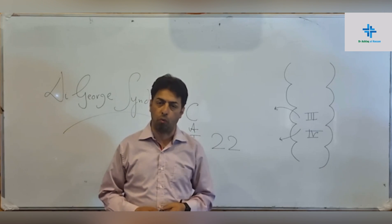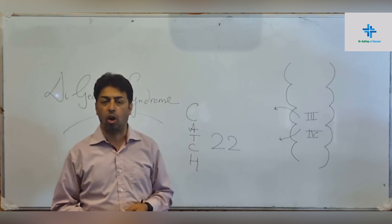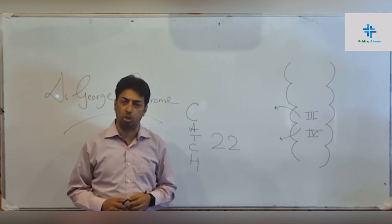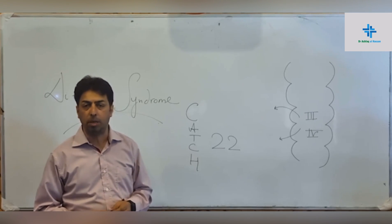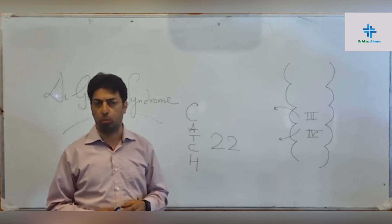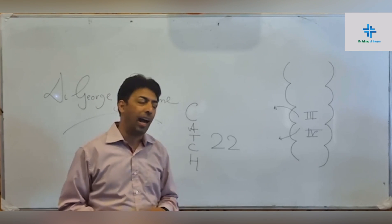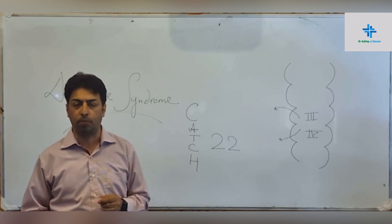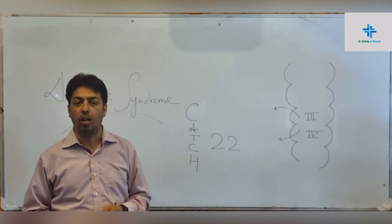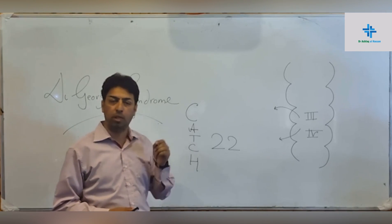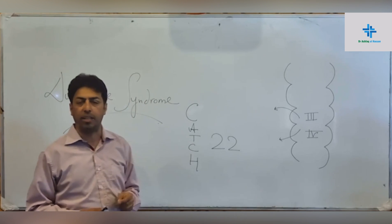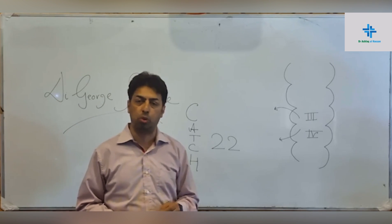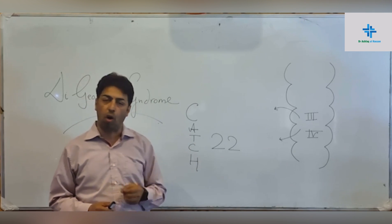Going to the specificities of DiGeorge syndrome, we'll deal with each aspect of these microdeletion syndromes. DiGeorge syndrome is a microdeletion syndrome, meaning not the whole chromosome but part of the chromosome gets deleted. If you look at the board, I've written CATCH 22. The 22 refers to chromosome number 22. DiGeorge syndrome causes microdeletion of the long arm of chromosome 22.